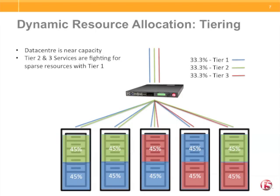Now onto tiering. In this scenario, we have a data center that has been heavily consolidated and is now dangerously near capacity at peak times. The problem is that we have low priority services getting equal share of compute resource as high priority services. Note tier 1, 2, and 3 all having equal share of resources.